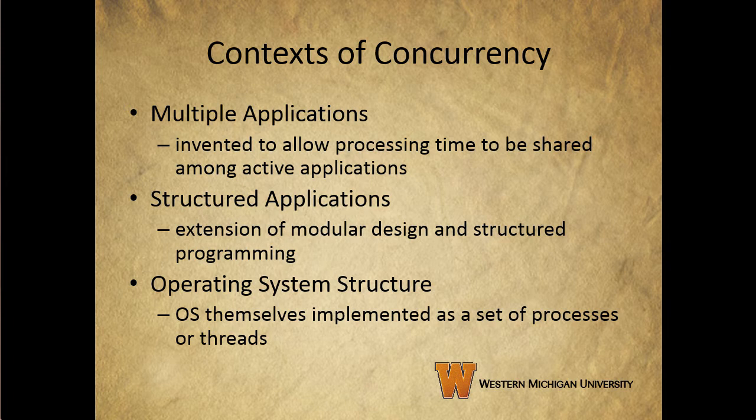Concurrency arises in three different contexts. We have multiple applications — multiprogramming was invented to allow processing time to be dynamically shared among a number of competing and active applications. We have structured applications, where some applications can be effectively programmed as a set of concurrent processes. And finally, at the operating system structure level itself, operating systems are often implemented as a set of processes or threads.